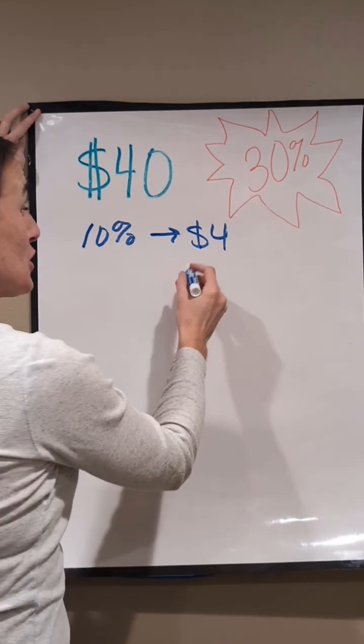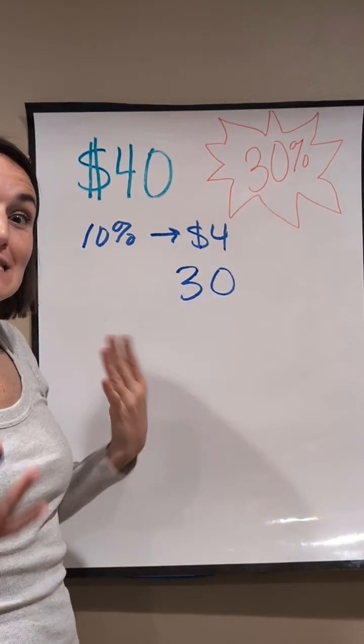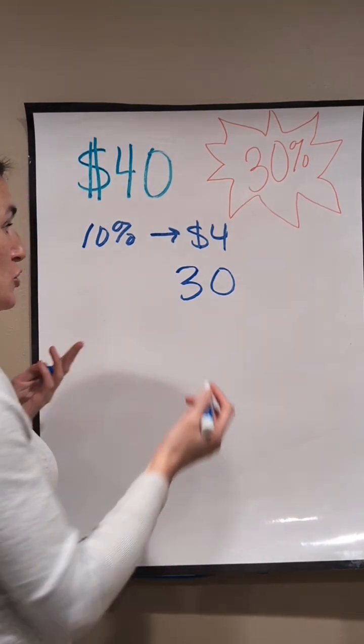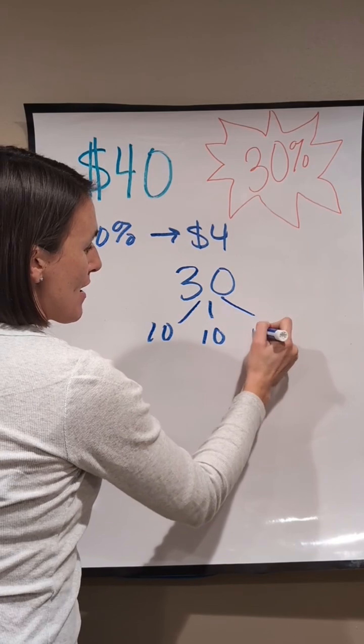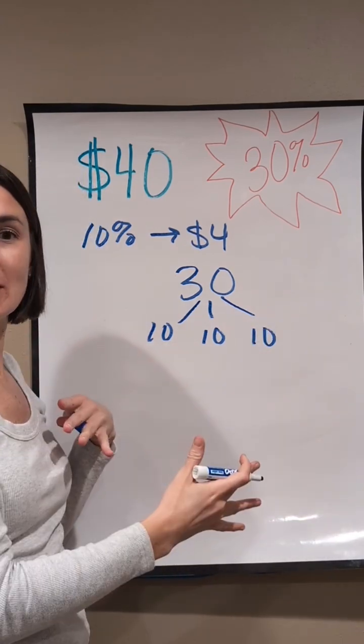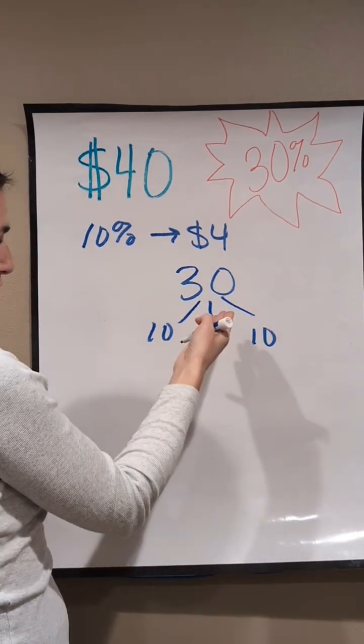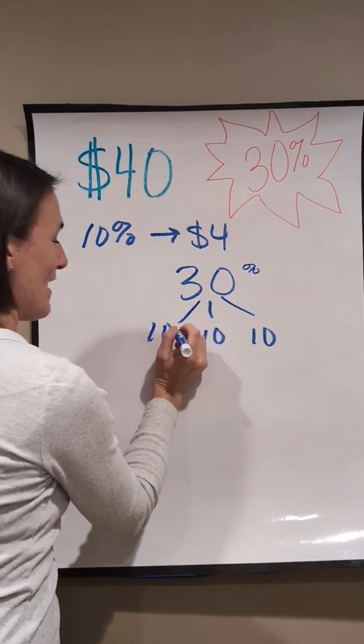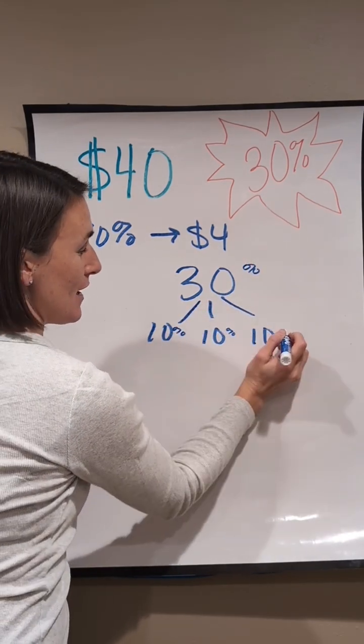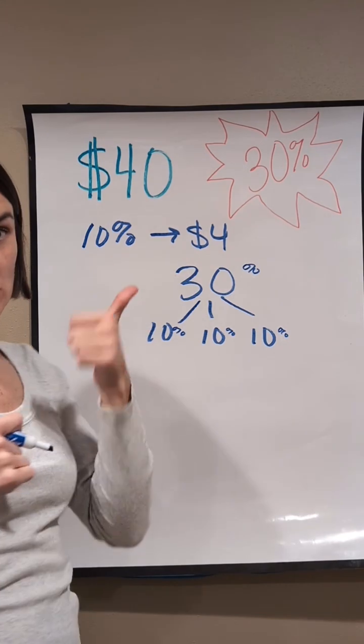We have something that's 30% off. So if I have 30%, I'm going to decompose it or break it down into groups of 10 so I can think a little bit more flexibly with this number and I can use what I know about my tens to find 30%. So if I have 30% instead of 30, I have three groups of 10%, 10, 20, 30.